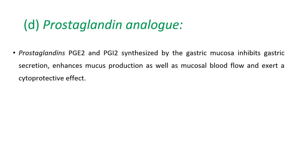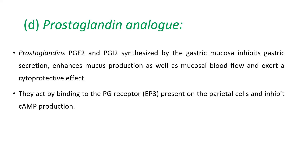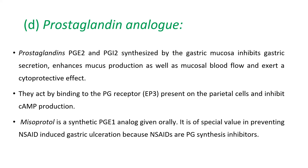The next class is prostaglandin analogues. PGE2 and PGI2, synthesized by the gastric mucosa, inhibit gastric secretion, enhance mucus production and mucosal blood flow, and exert a cytoprotective effect. They act by binding to PG receptors on the parietal cell and inhibiting cyclic AMP production. Misoprostol is a synthetic PGE1 analog given orally. It has special value in preventing NSAID-induced gastric ulceration because NSAIDs are prostaglandin synthesis inhibitors. Diarrhea and muscle cramps are very common side effects.